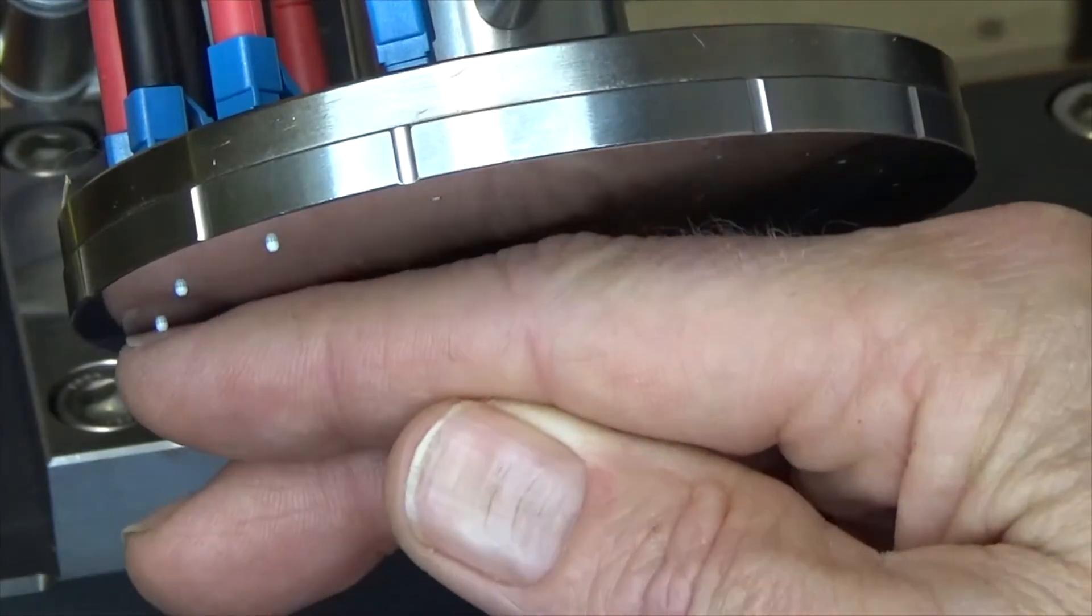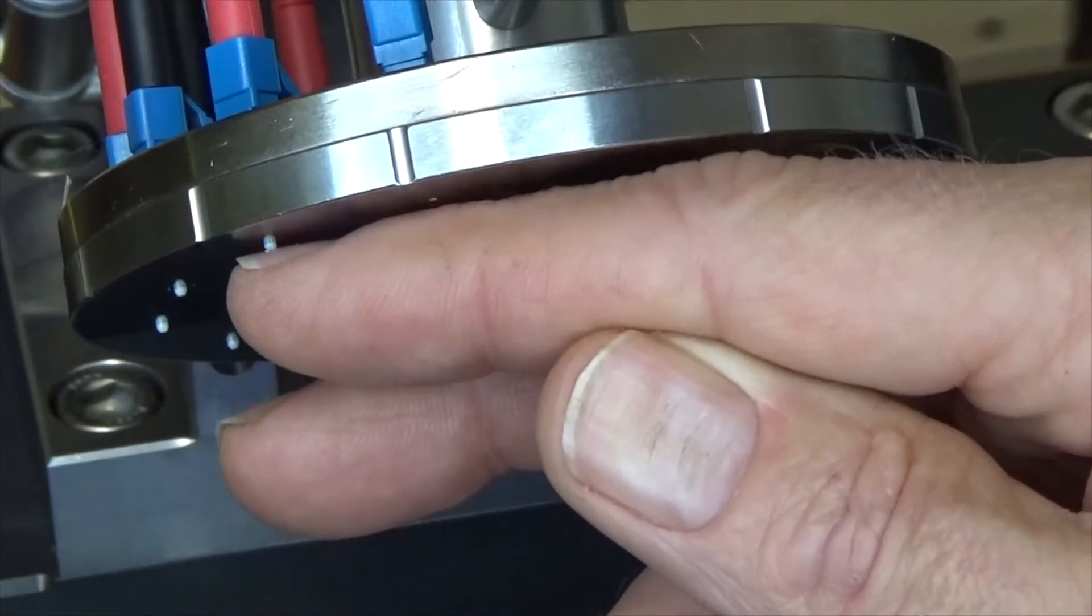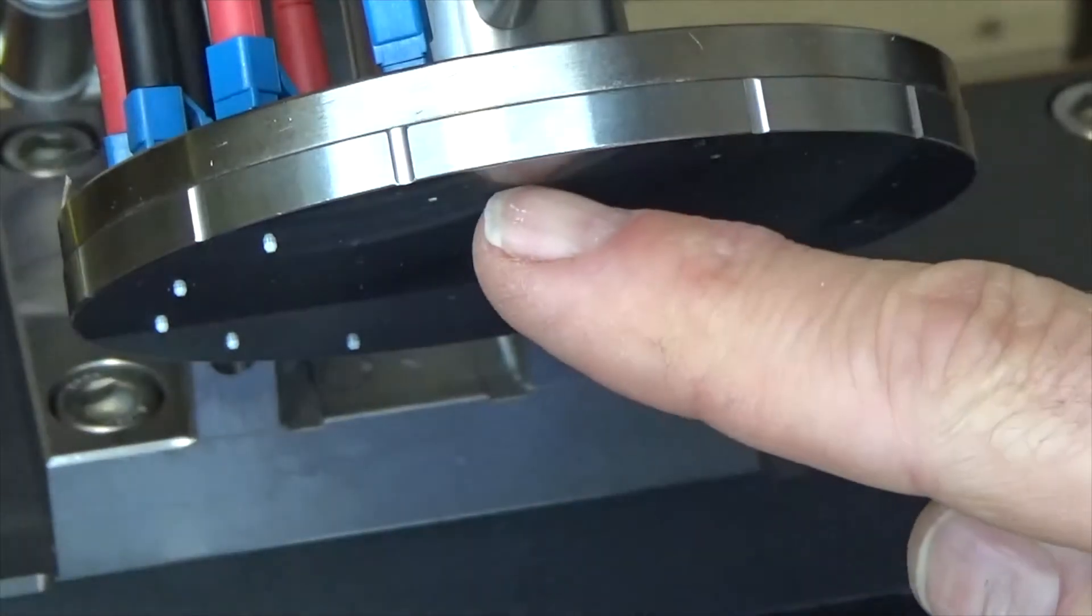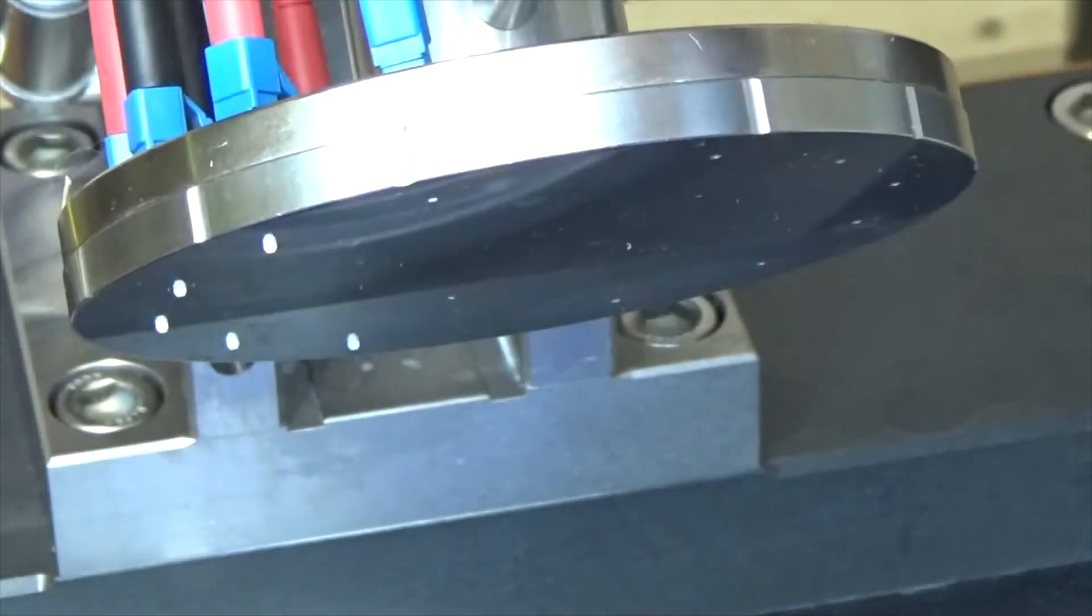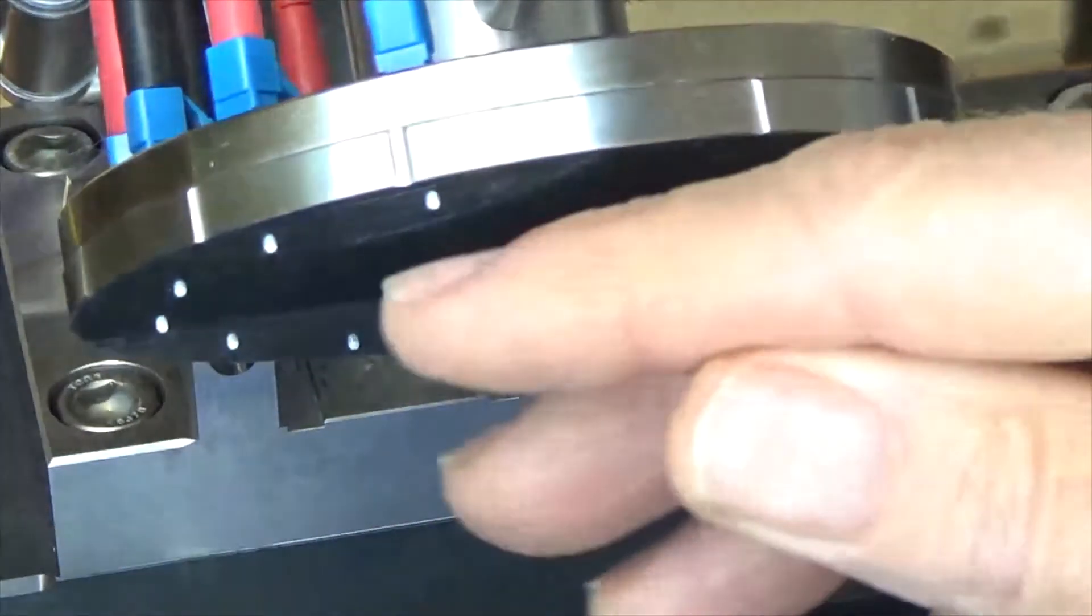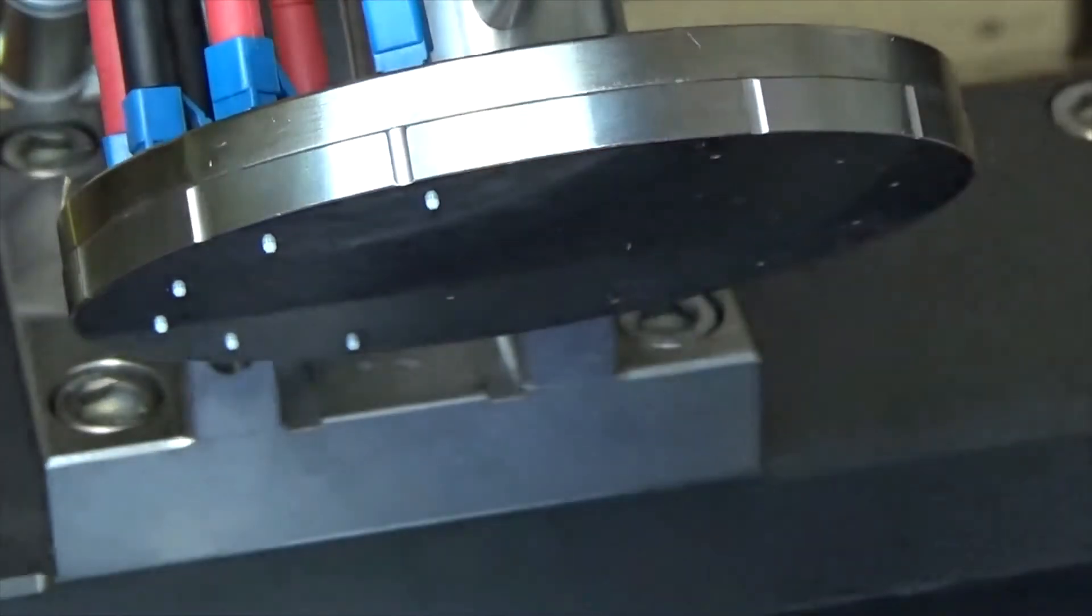Uniformity of the ferrule protrusion and connector spring function is important to ensure good polishing results for all connectors loaded in the fixture. Inspecting the batch prior to polishing will increase the first-pass yield results significantly.